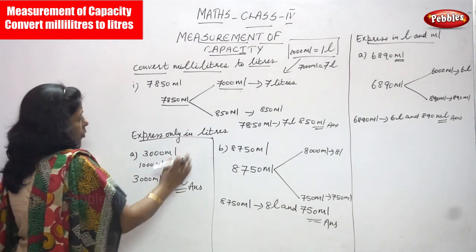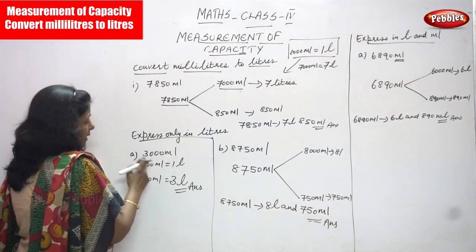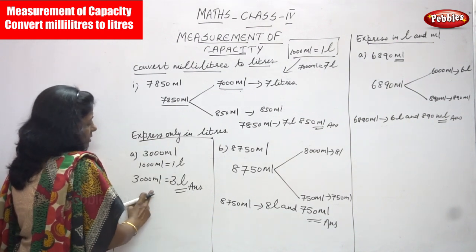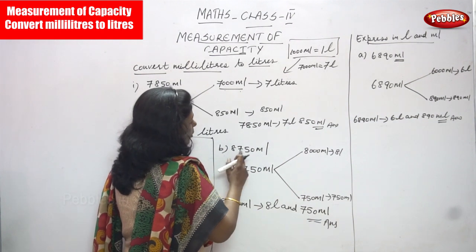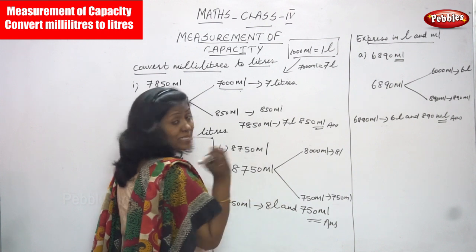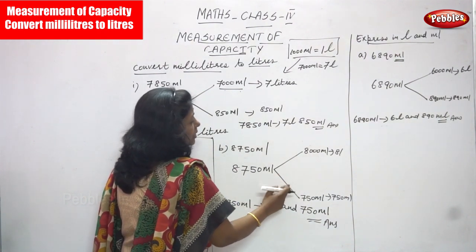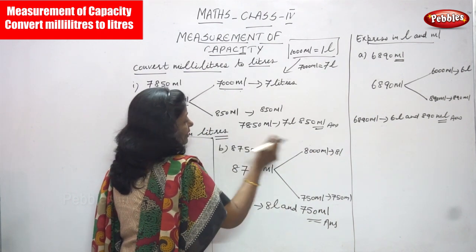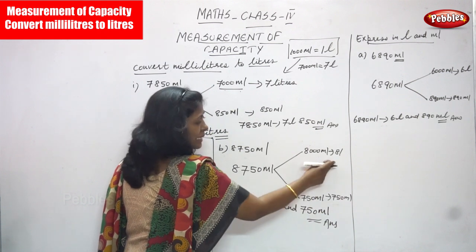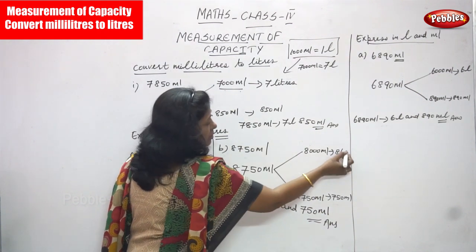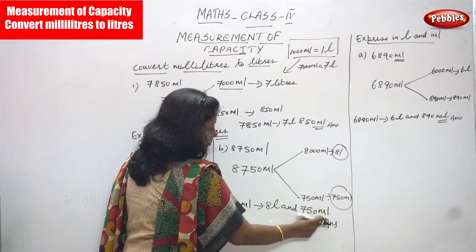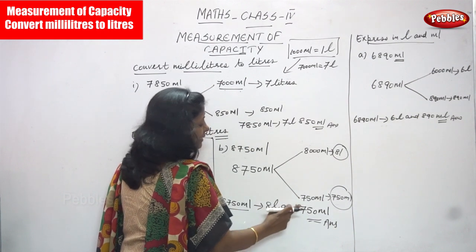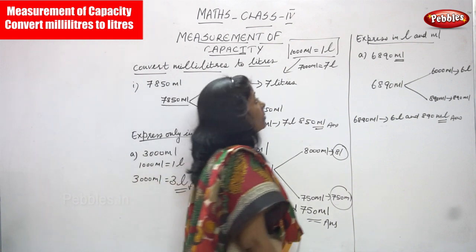3000 ml is converted into 3 liters, since 1000 ml equals 1 liter. Next, 8750 ml is separated into 8000 ml and 750 ml. 8000 ml converts to 8 liters, and 750 ml is written as it is. So 8750 ml equals 8 liters and 750 ml.